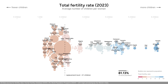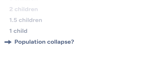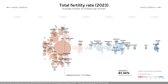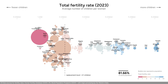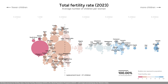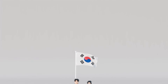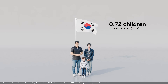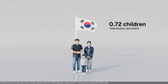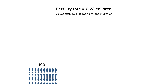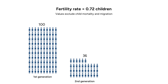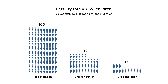But some countries might be in much bigger trouble than the EU. In 2023, there were four countries with a fertility rate below one. At the bottom of the chart, we have South Korea. South Korean women had an average of 0.72 children — the lowest fertility rate in the world. If the fertility rate stays like this, each generation will be almost three times smaller than the previous one, a population collapse without precedent in history.